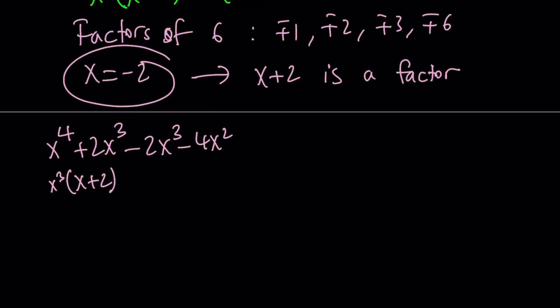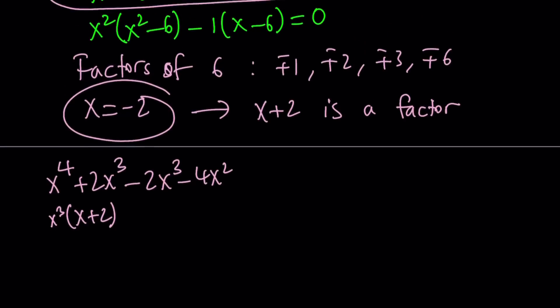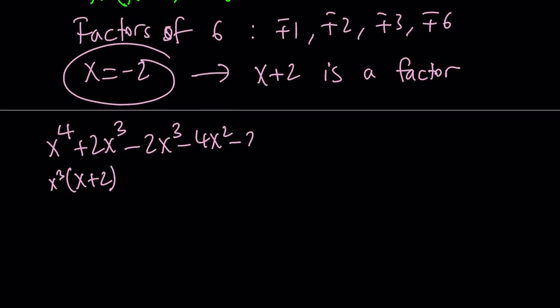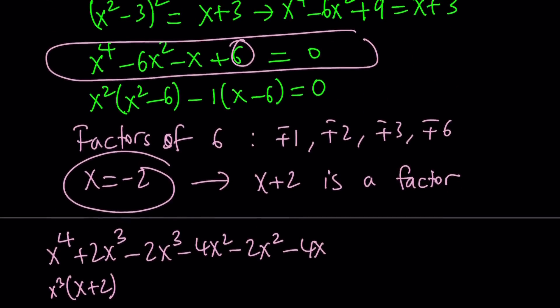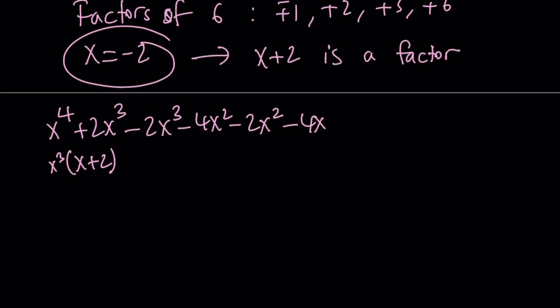But negative 2x cubed must be followed by negative 4x squared. Again, for the same reason. And then, of course, I have negative 6x squared. So I have to follow this by negative 2x squared. And now it's balanced. But negative 2x squared must be followed by negative 4x. So that x plus 2 is a factor. But we only have negative 1x. So we have to add 3x.